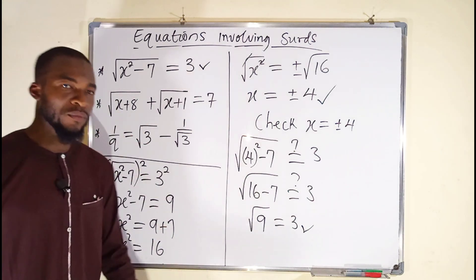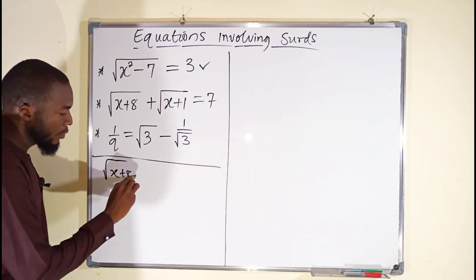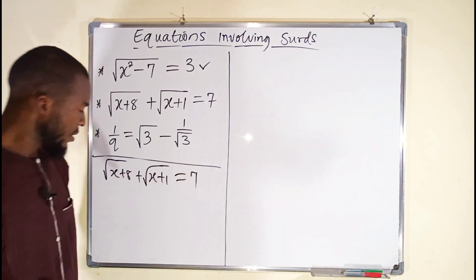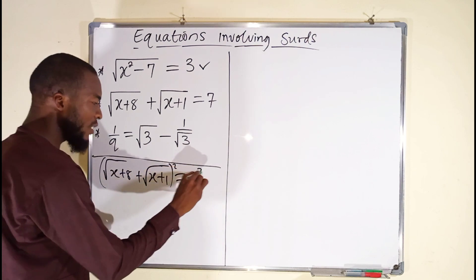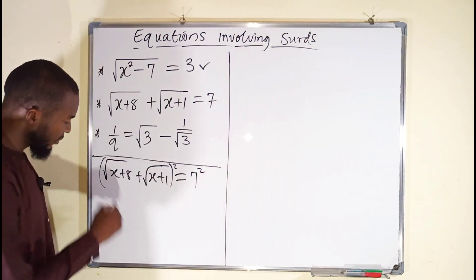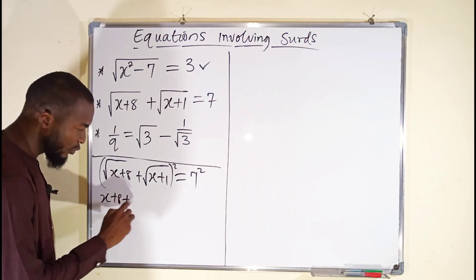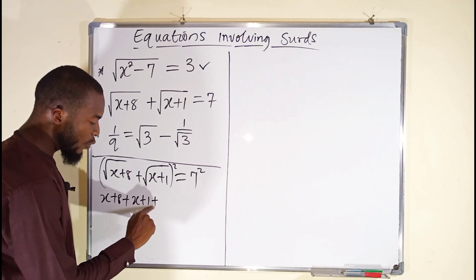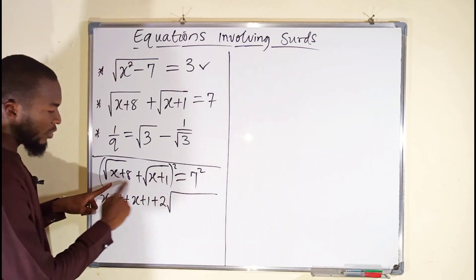Now let us move on to the second equation. We have square root of x plus 8, plus square root of x plus 1, equal to 7. Again, let us square both sides. Using the idea of Pascal's triangle, we take the first term and square it — squaring cancels the square root, leaving x plus 8 — then the second term squared gives x plus 1. Then we add 2 times the first term times the second term, which gives us the square root of the product of those two terms.